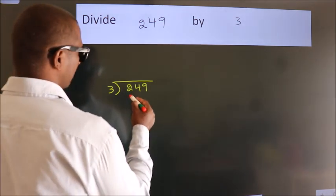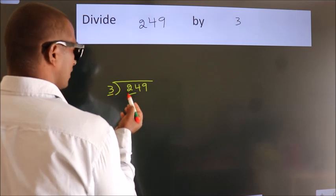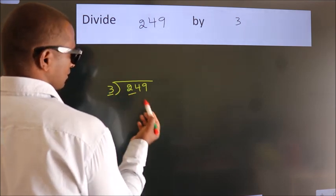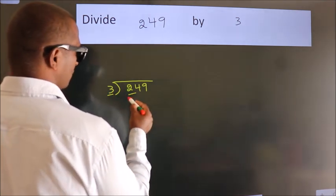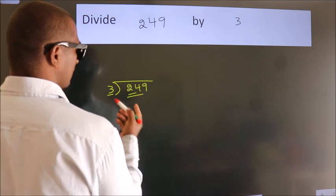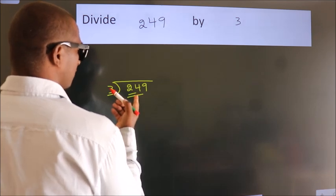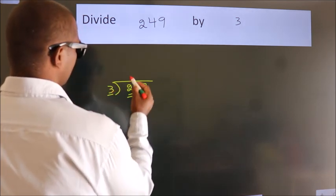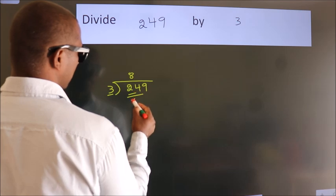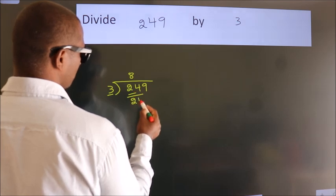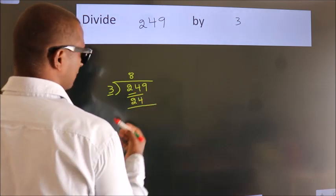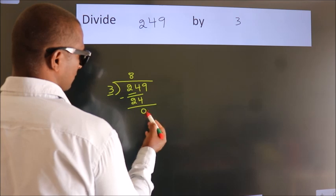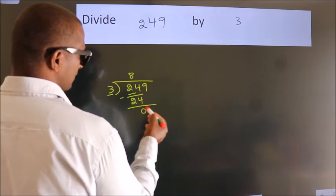Here we have 2, and here 3. 2 is smaller than 3, so we should take 2 numbers: 24. When do we get 24? In the 3 times table — 3 eights are 24. Now we should subtract. We get 0.